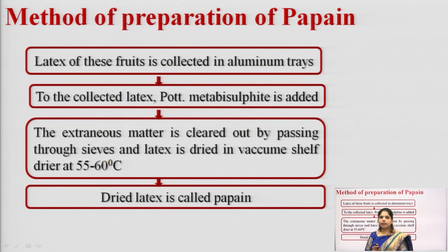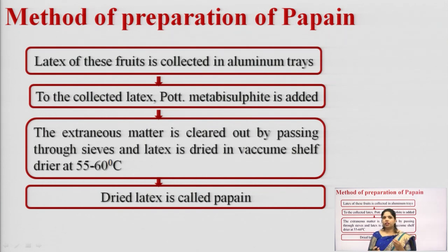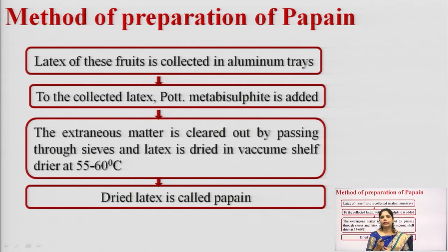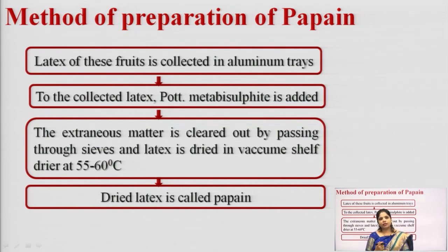The biological source and botanical name is Carica papaya Linn, and its family is Caricaceae. For the method of preparation of papain: the latex of the fruits is collected in an aluminium tray. To the collected latex, potassium metabisulphite is added. Then extraneous matter is cleared out by passing through sieves, and the latex is dried in a shelf dryer at 55 to 60 degrees centigrade.